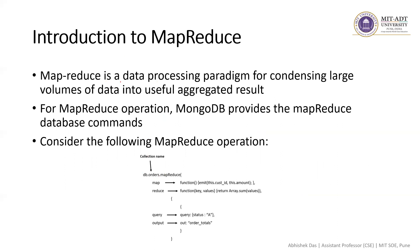MapReduce is a data processing paradigm. The definition of MapReduce says that it is a data processing paradigm for condensing large volumes of data into useful aggregated results. We use MapReduce when we are dealing with a very large volume of data. If we have huge data and want to aggregate it into some useful summarized form, then we use the concept of MapReduce.